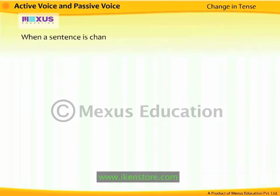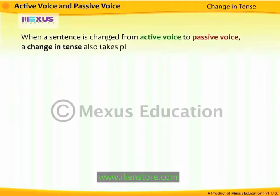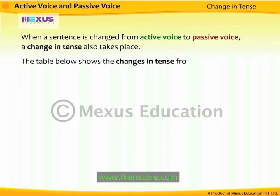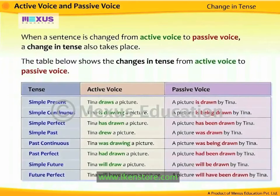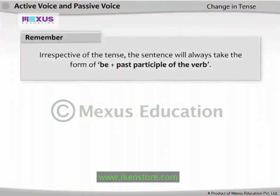When a sentence is changed from Active Voice to Passive Voice, a change in tense also takes place. The table below shows the changes in tense from Active Voice to Passive Voice. Remember that irrespective of the tense, the sentence will always take the form of 'be + past participle of the verb.'